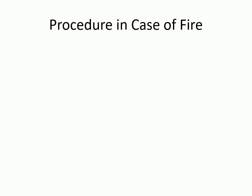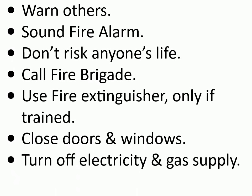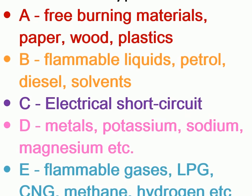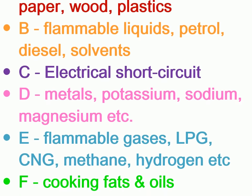Procedure in case of fire: alert security and front office; don't panic; warn others; sound fire alarm; don't risk anyone's life; call the fire brigade; use fire extinguisher only if trained; close doors and windows; turn off electricity and gas supply. Types of fire: A — free burning materials: paper, wood, plastics; B — flammable liquids: petrol, diesel, solvents; C — electrical short circuit; D — metals: potassium, sodium, magnesium, etc.; E — flammable gases: LPG, CNG, methane, hydrogen, etc.; F — cooking fats and oils.